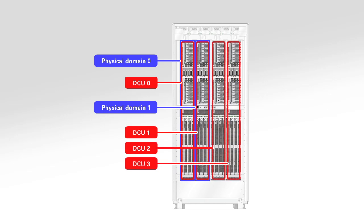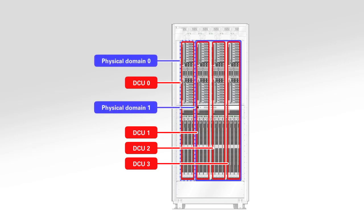You can then increase your hardware resources by combining these new DCUs to existing physical domains. As this example shows, DCU 2 and DCU 3 can be added to physical domain 1, while physical domain 0 continues to operate without interruption.